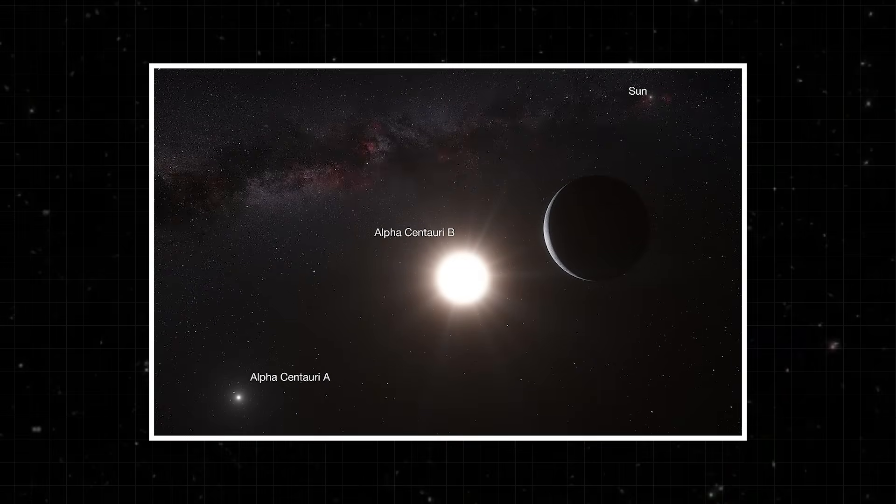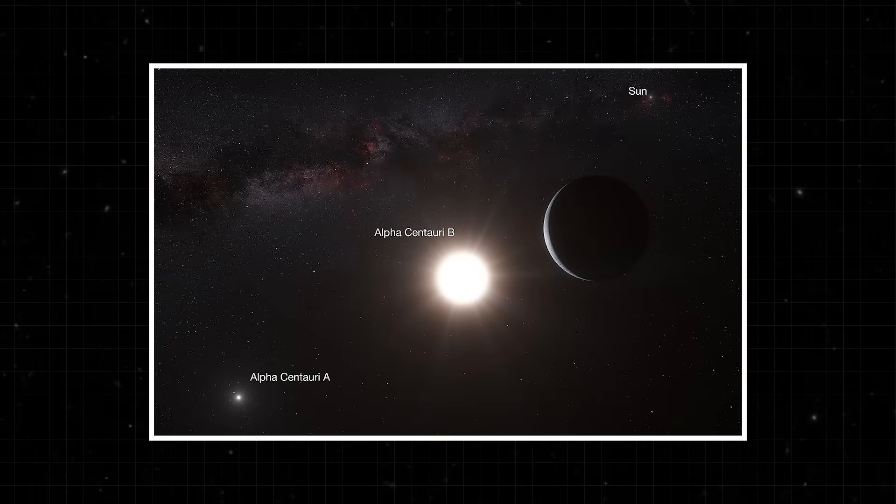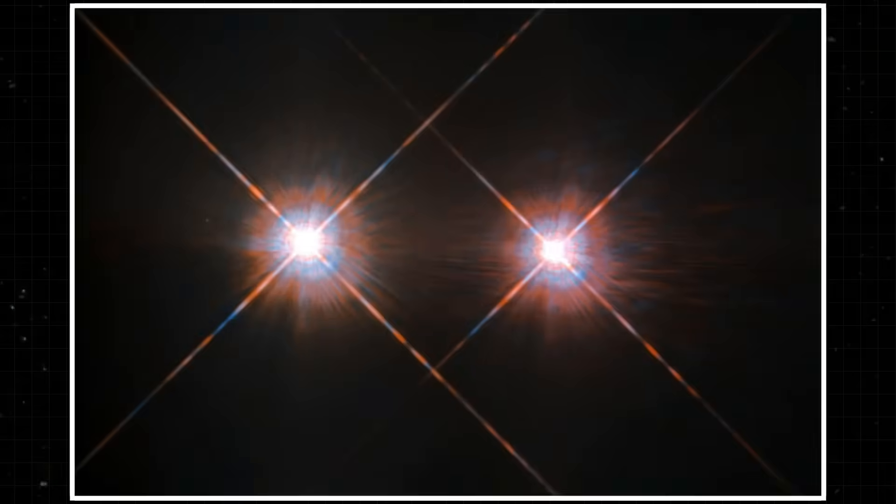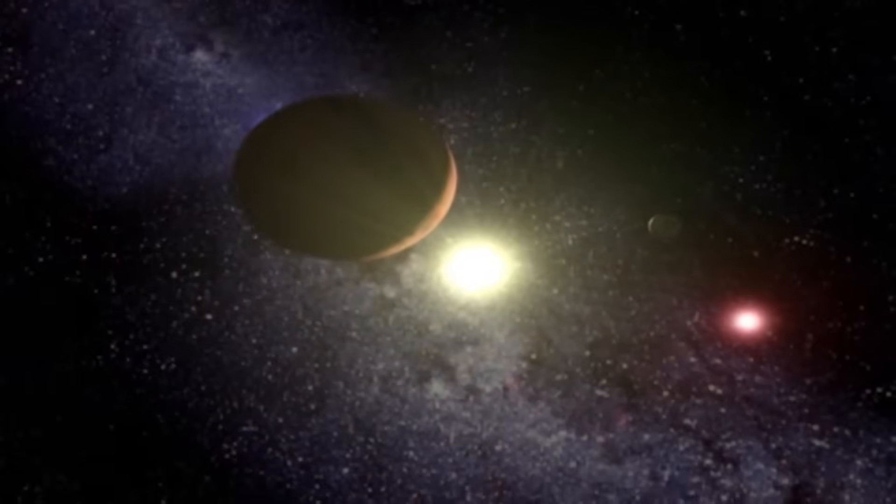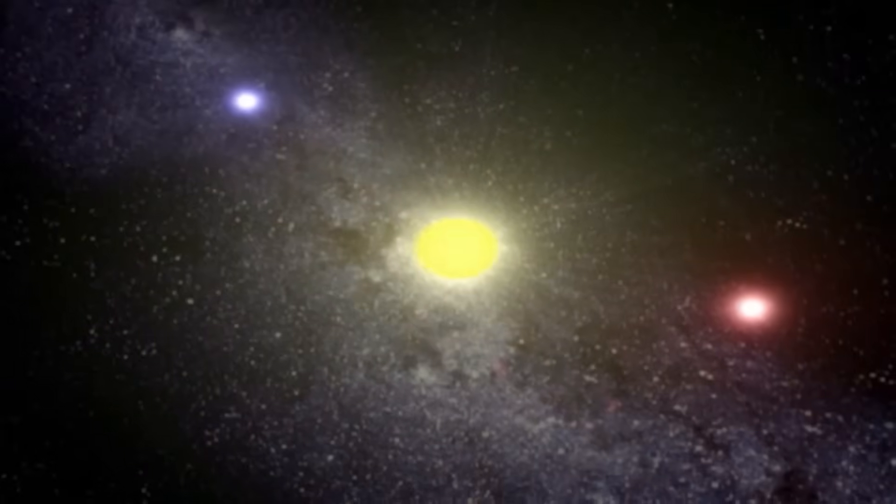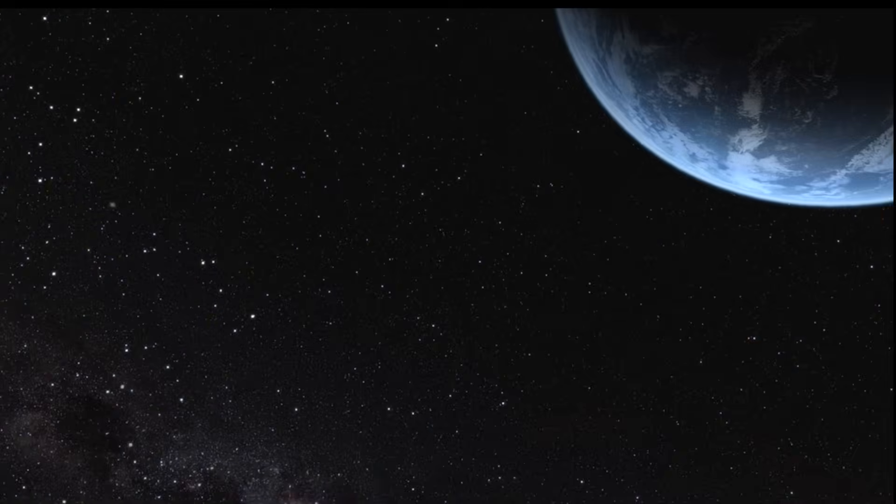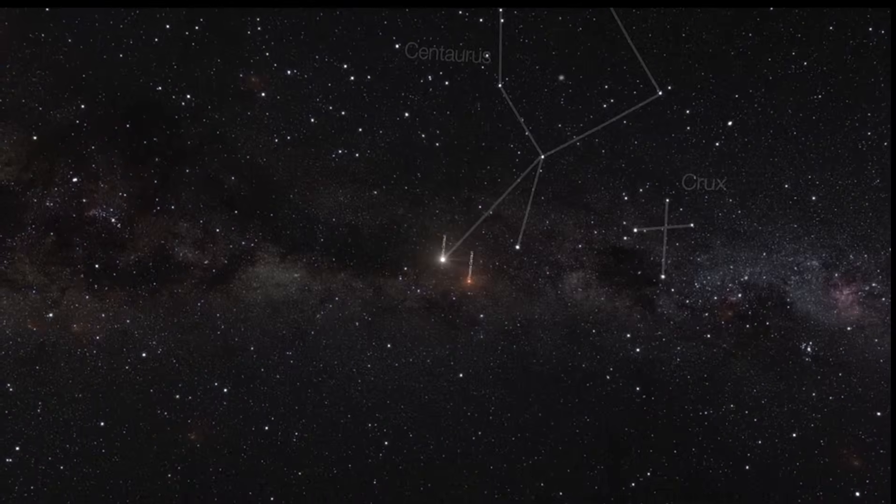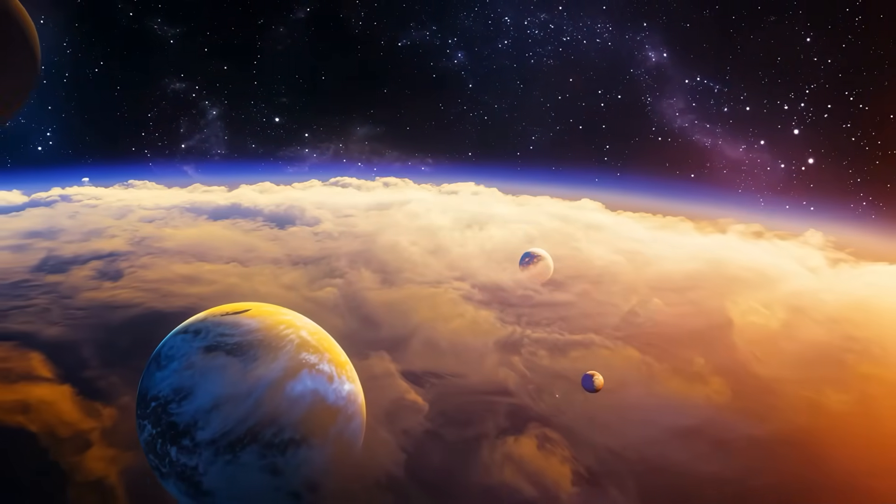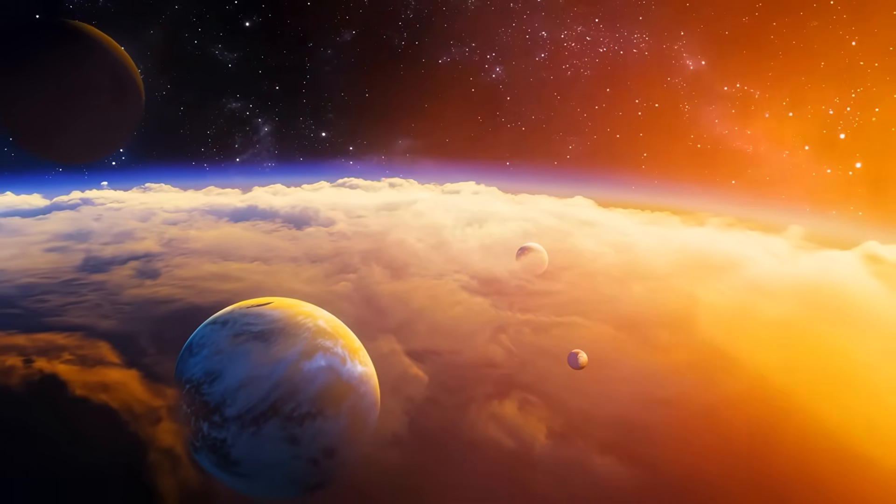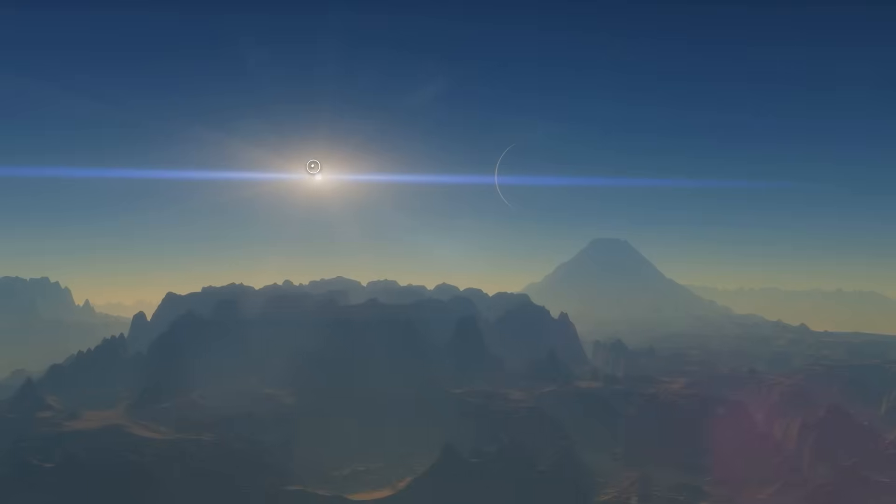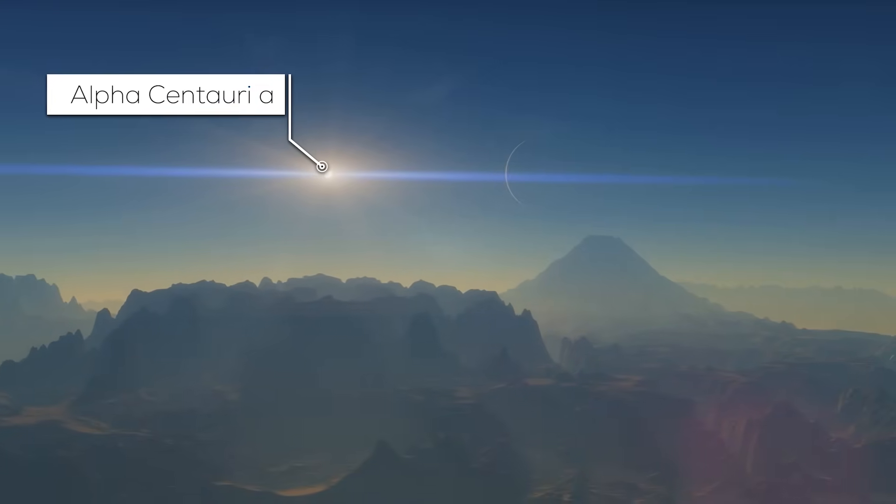Alpha Centauri A is close enough to feel almost reachable and at the same time absurdly distant. It sits just over four light years away, shining as one of the components of the Alpha Centauri system, the closest group of stars to the Sun. If there are habitable worlds around a Sun-like star anywhere beyond our own system, Alpha Centauri A is one of the best candidates.